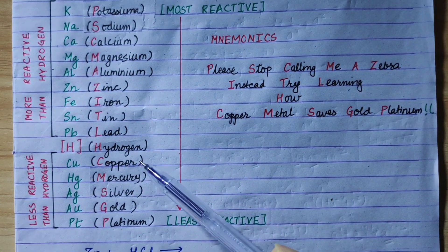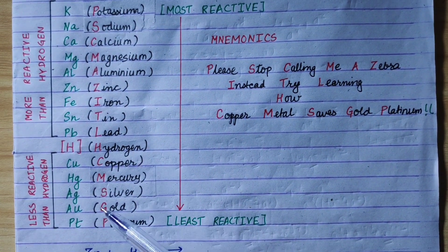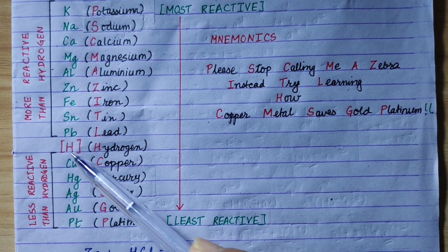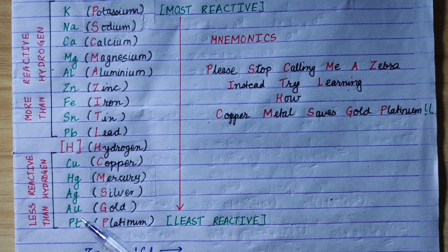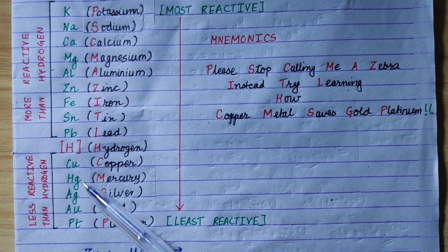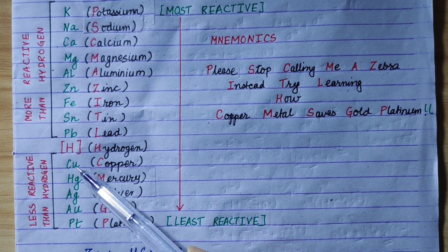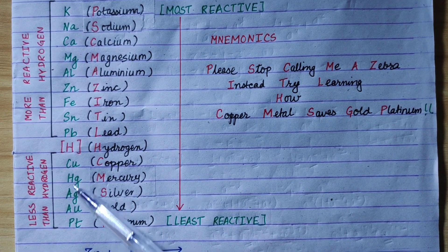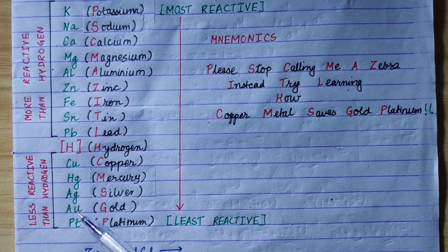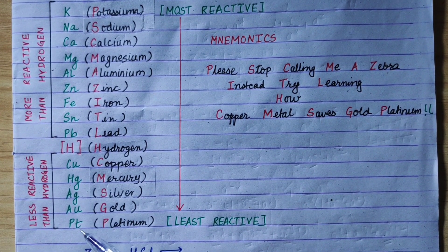The metals that are less reactive than hydrogen are: Copper, Mercury, Silver, Gold, Platinum.